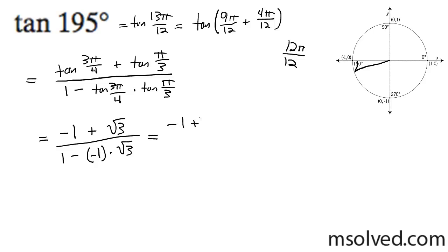So bring this over, negative 1 plus root 3 all over 1, and then negative 1 times root 3, this ends up being plus root 3.